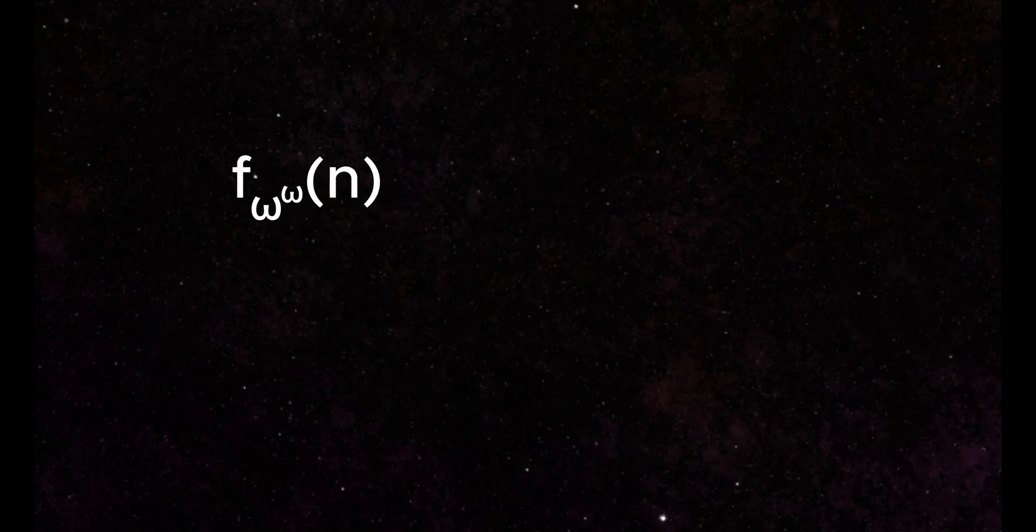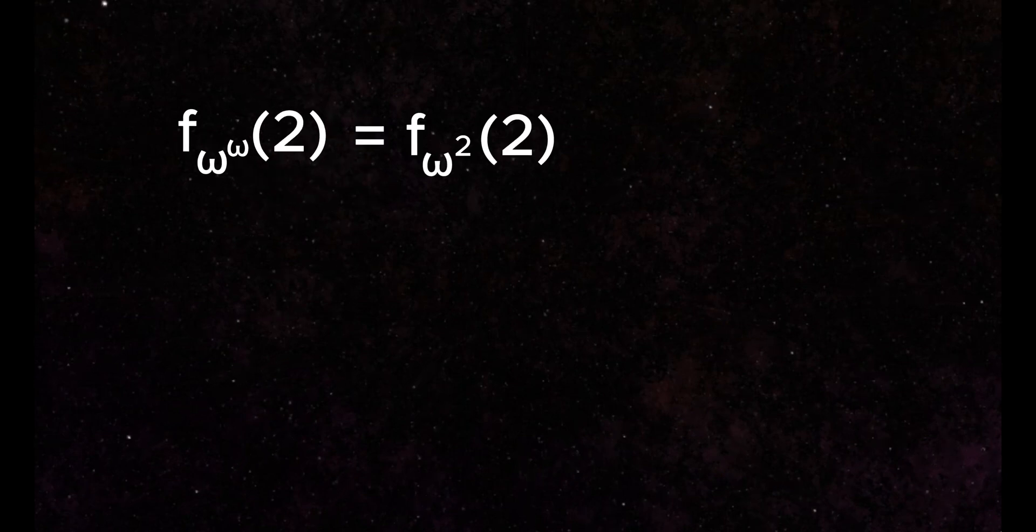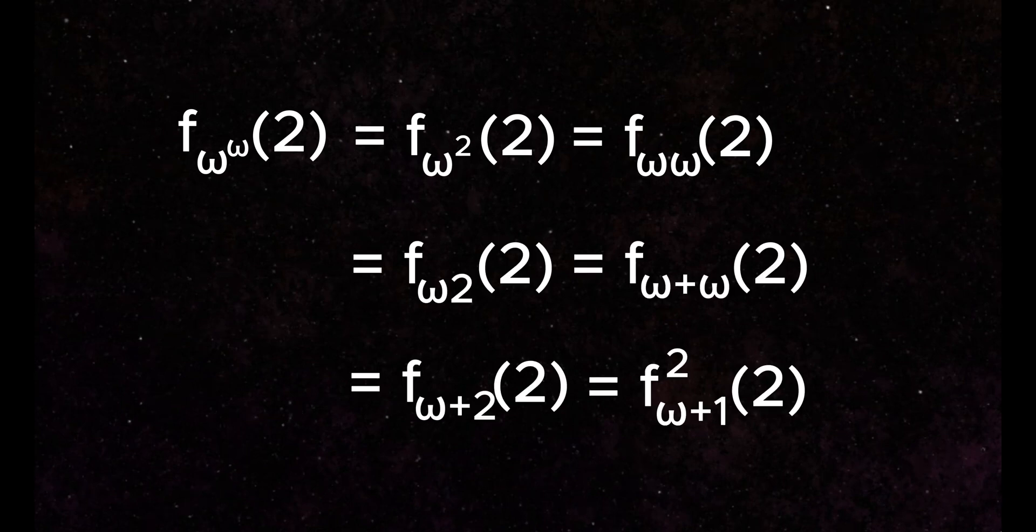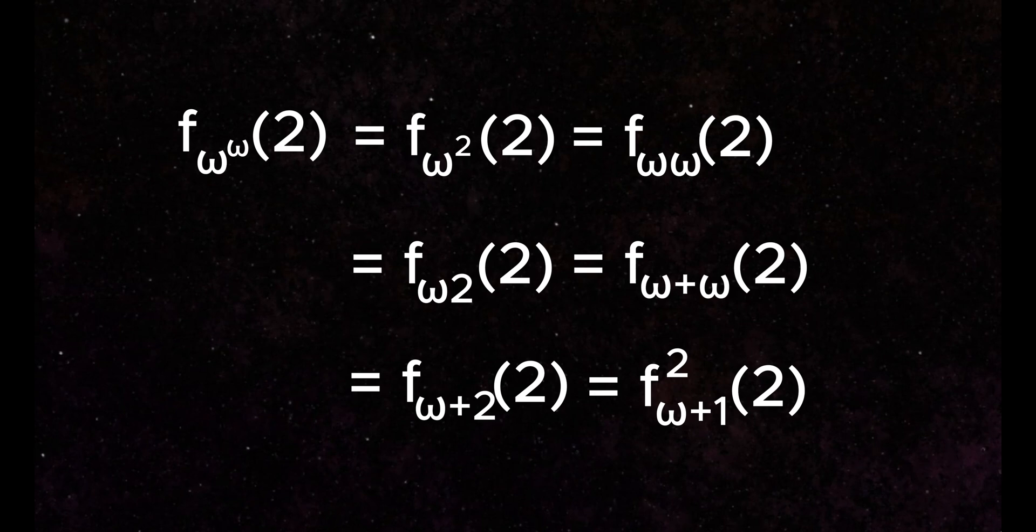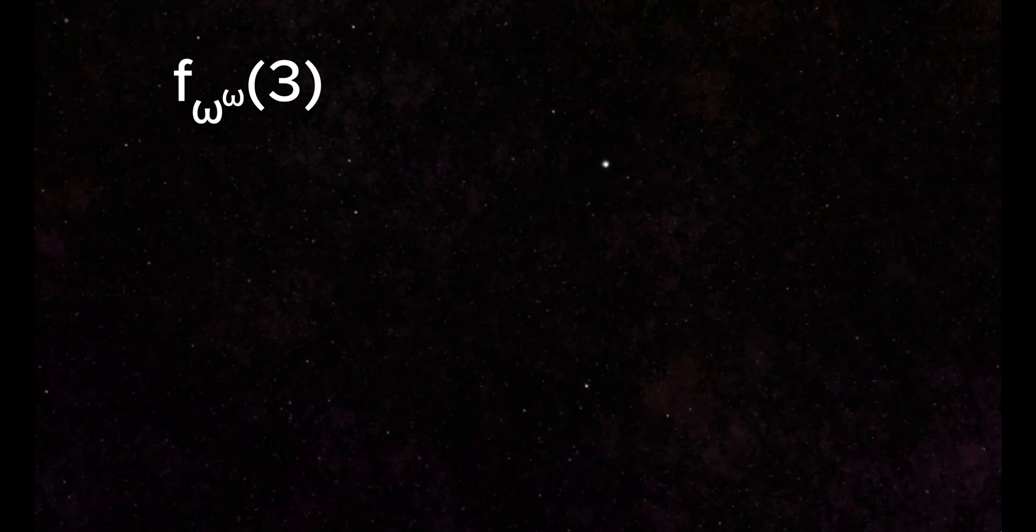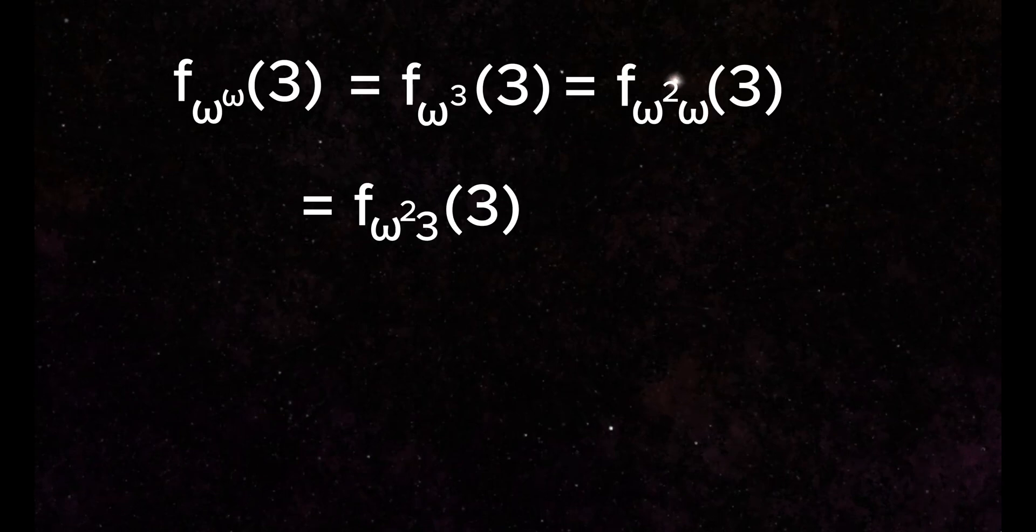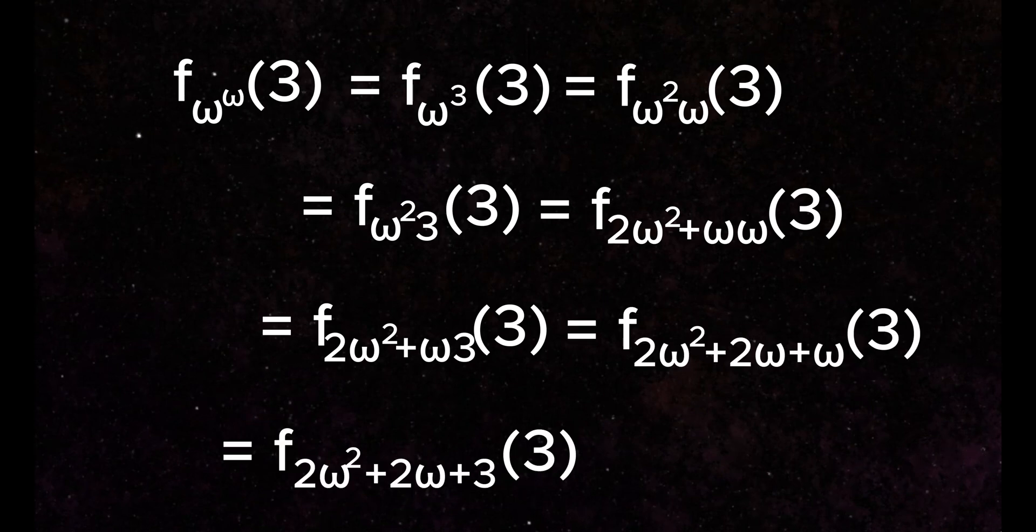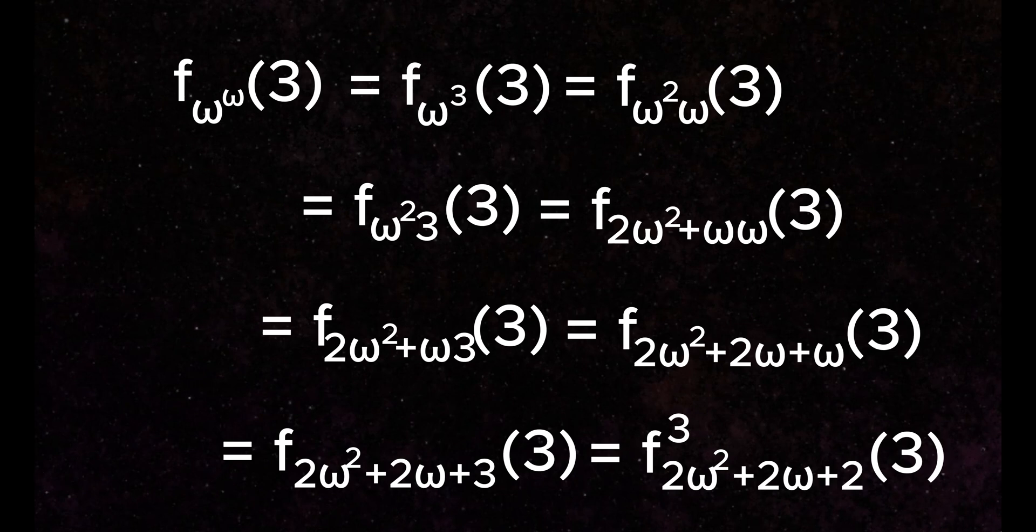A beast of a function. At small values, like 2, this function condenses down to the f_omega+1 function, which approaches numbers like Moser's number at this level. But just moving to the next number, 3, results in an insanely fast-growing function. This function builds so quickly that surely we have reached Goodstein's function, right? Still no.